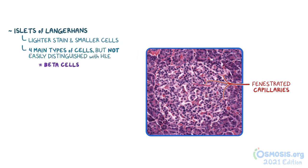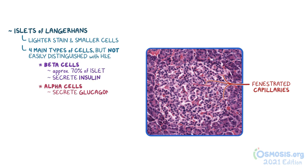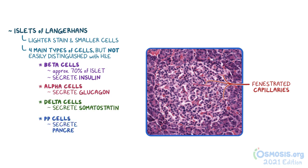Beta cells are the most common cell type, comprising approximately 70% of pancreatic islets, and secrete insulin. The islets also consist of alpha cells that secrete glucagon, delta cells that secrete somatostatin, and PP cells that secrete pancreatic polypeptide.